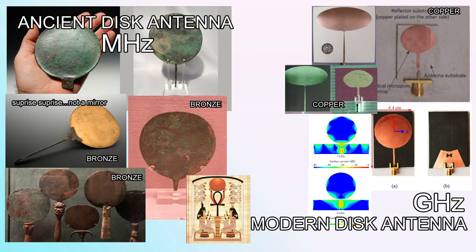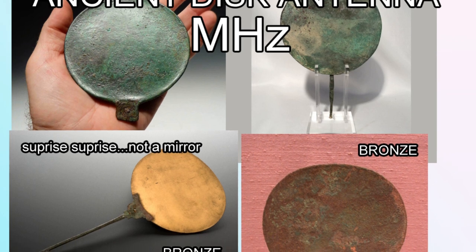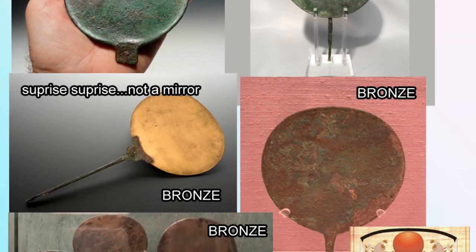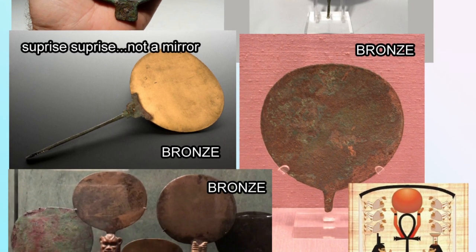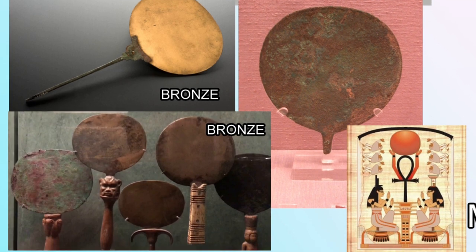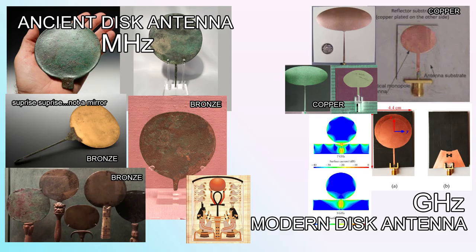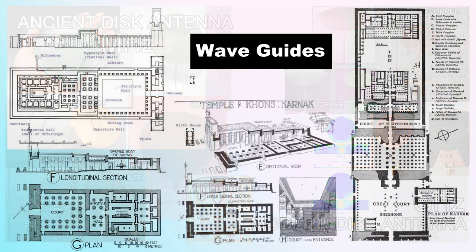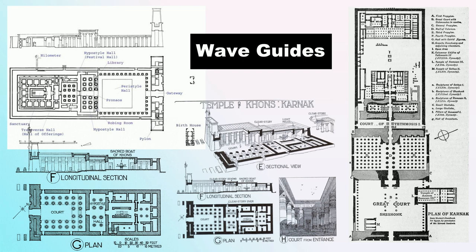One possibility for signal transmission is the ancient bronze disc mirrors made as far back as around 2900 BC. These ancient discs would act perfectly as antenna — here I've shown modern gigahertz antennas used for Wi-Fi that look very similar. These discs were three to five inches across, corresponding roughly to the three to five megahertz range. Even a hieroglyphic shows someone holding a mirror-like disc on a pole.